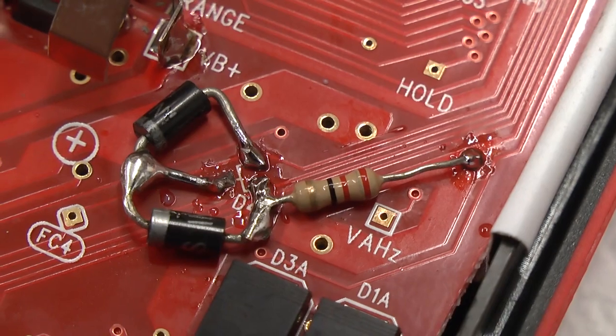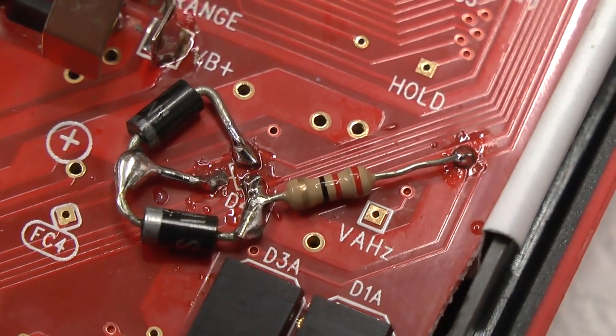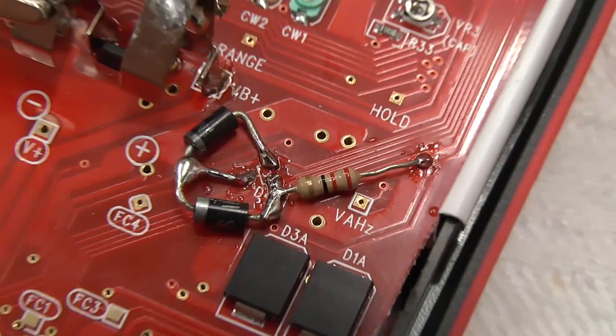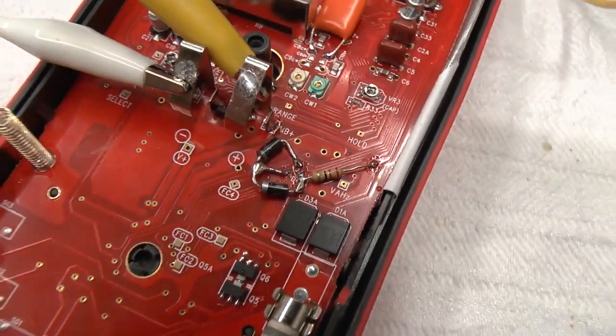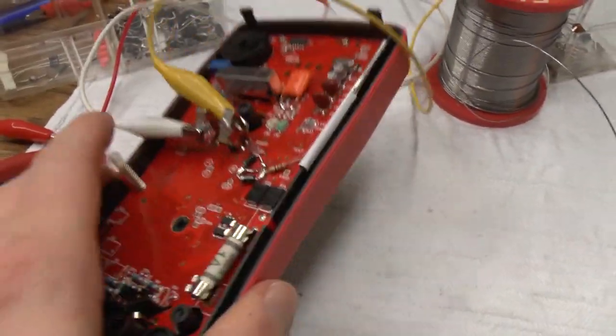It's just the standard 0.6 volt drop. So, you don't even have to use the Schottky diodes. The problem with this setup, however, is the case does not fit together anymore, so I'll have to change that.